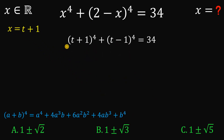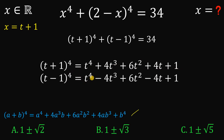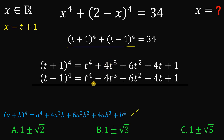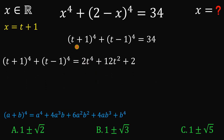The expansion of (t plus 1) to the fourth power equals t to the fourth plus 4t cubed plus 6t squared plus 4t plus 1. The expansion of (t minus 1) to the fourth power equals t to the fourth minus 4t cubed plus 6t squared minus 4t plus 1. When we add these two results, positive 4t cubed and negative 4t cubed cancel to 0, and positive 4t and negative 4t cancel to 0. So the sum is 2t to the fourth plus 12t squared plus 2, which equals the left-hand side of our equation.